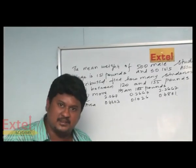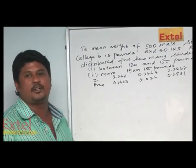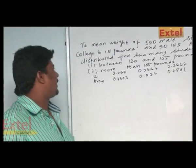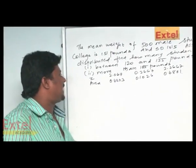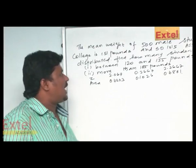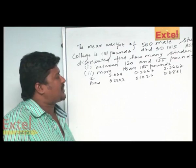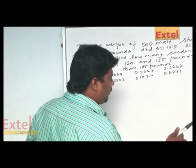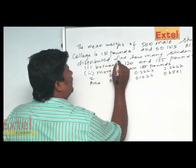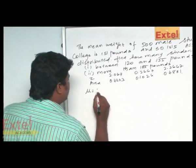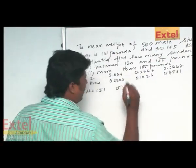This comes under the application part. The area and probability values are also given in the problem. For z equals to 2.06, the area is 0.4803 and 0.2667 gives 0.1026, and for 2.267 we get 0.4881. So the given values are: mean mu is equal to 151, standard deviation sigma is equal to 15, and total number of male students is equal to 500.